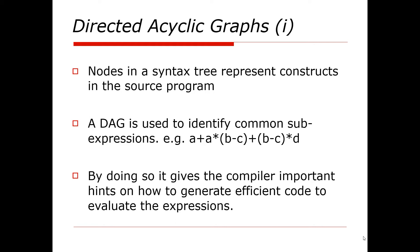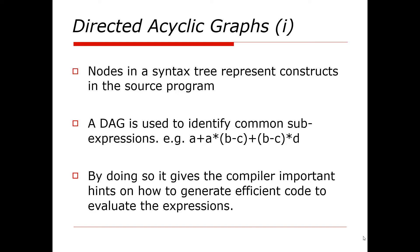Here we will solve this expression: a + a*(b-c) + (b-c)*d. So this is the DAG for this expression. Here, firstly we can see the common thing: b-c and b-c, both are common. That's why we root b and c at the bottom part of the graph.